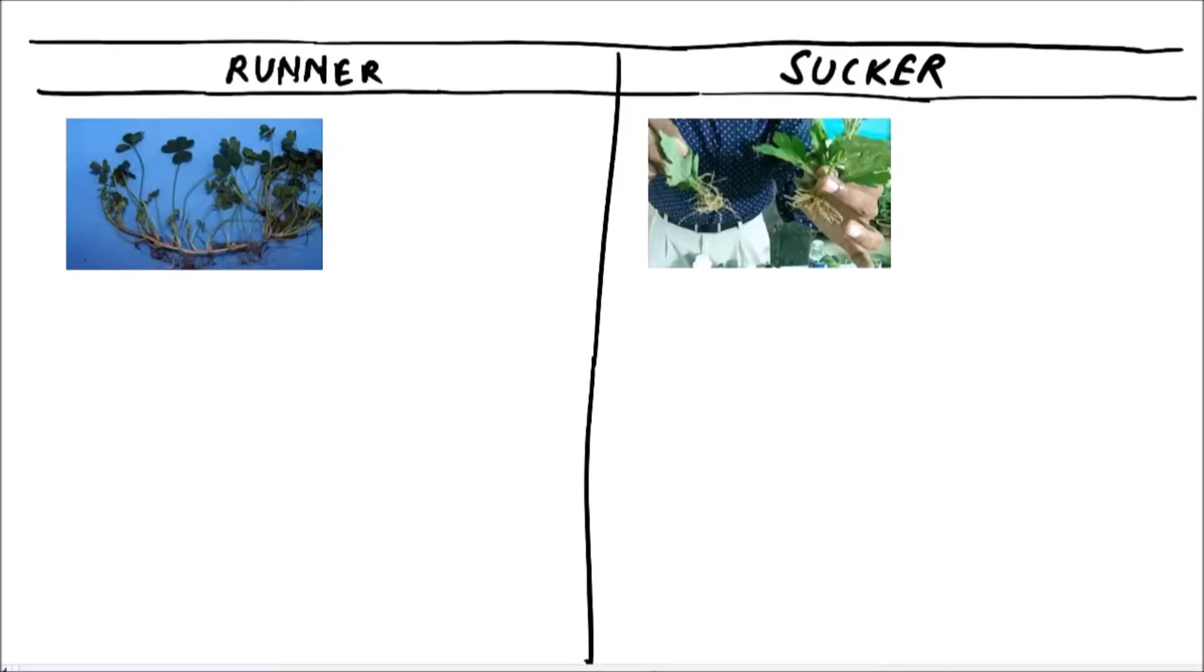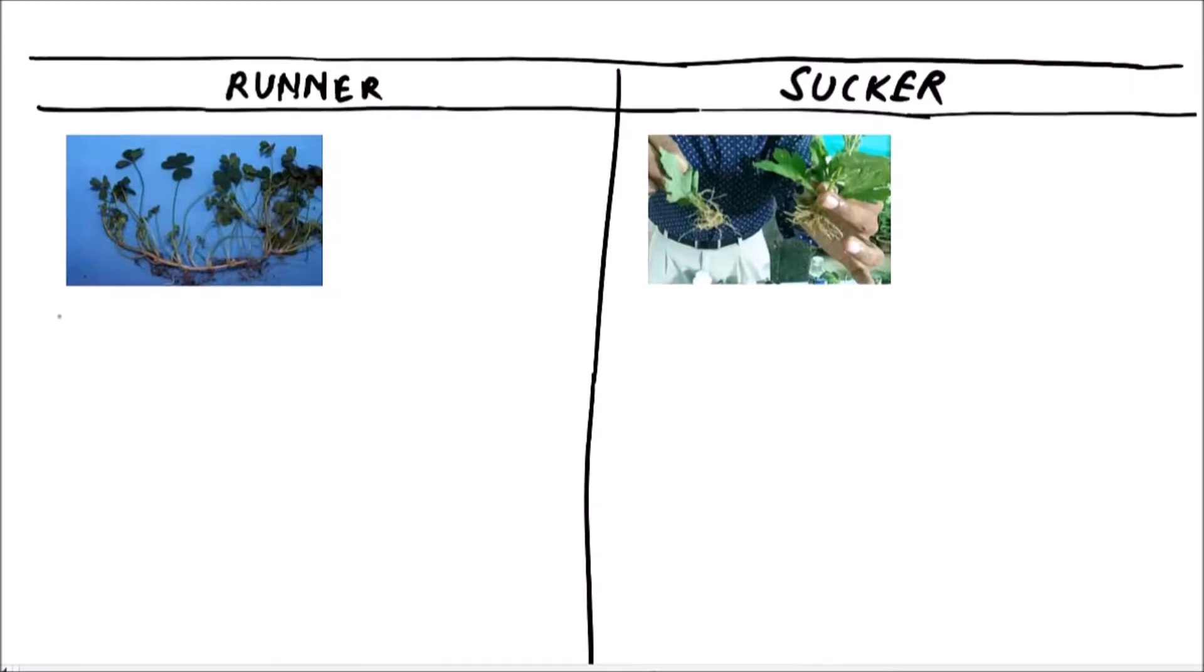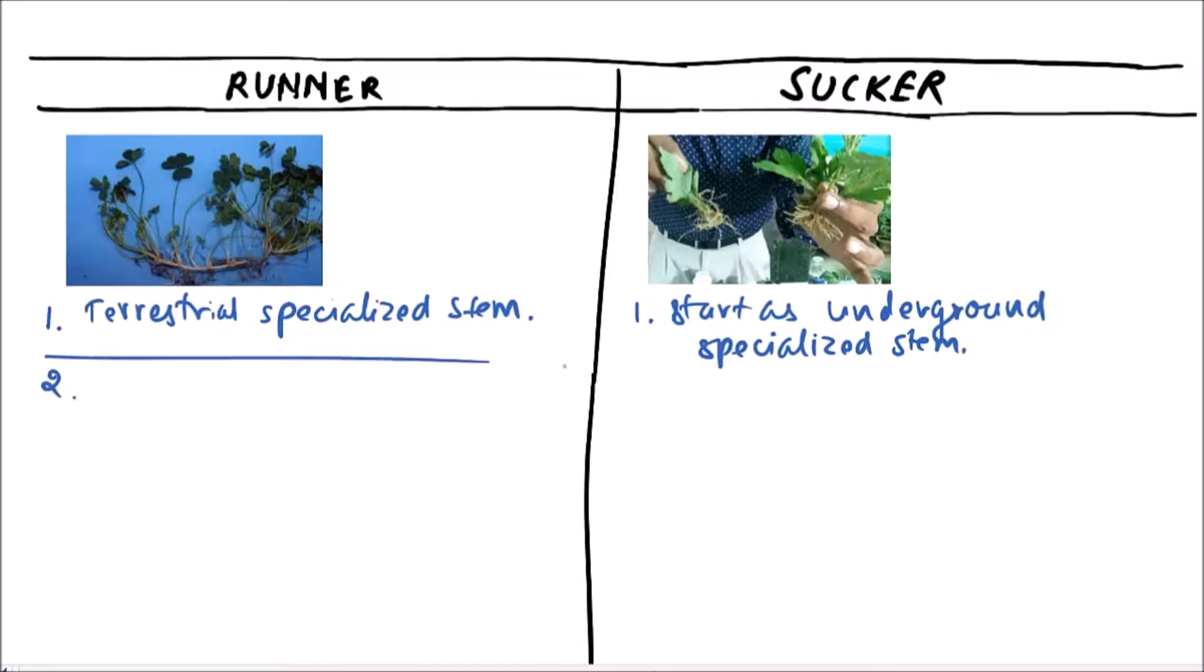Welcome to Studio Biology. In this video, we are going to discuss the difference between runners and suckers. Runners are terrestrial specialized stems, while suckers start as underground specialized stems. Runner is horizontal.